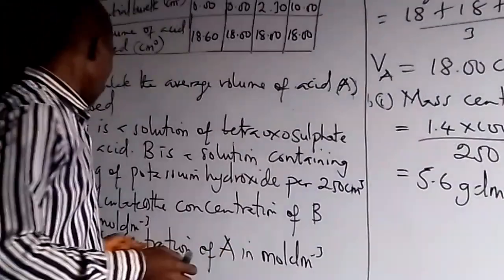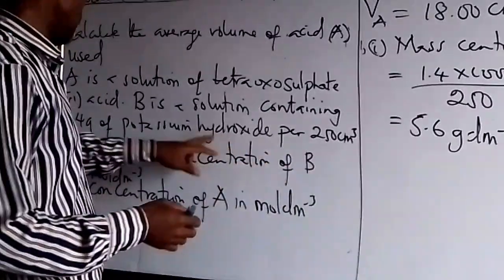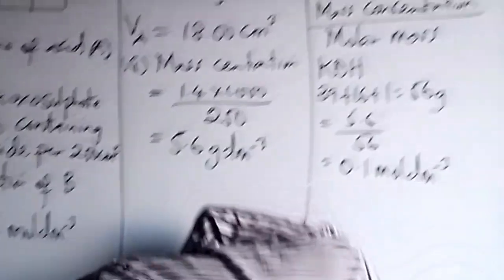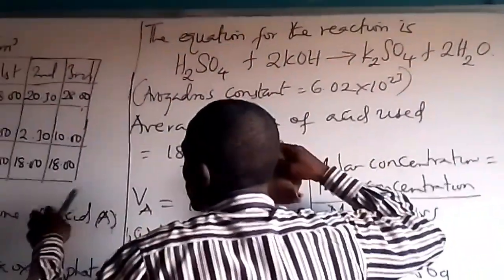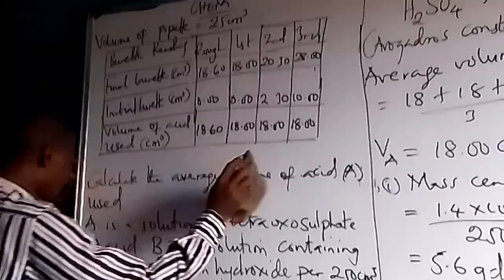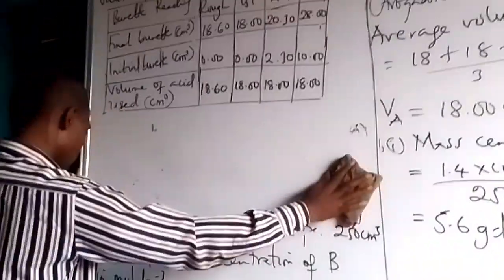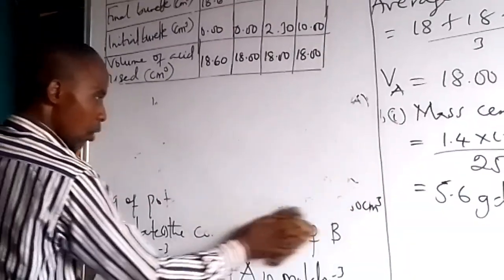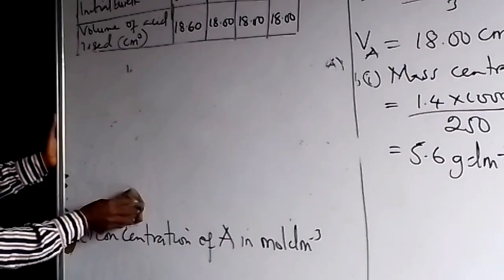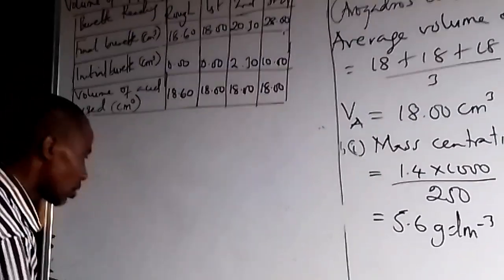Now so we have answered this concentration of B, which is the base in moles per dm³. Now let's clean the board and solve this one. Alright, let's clean this place and solve this.